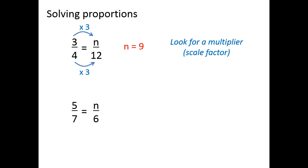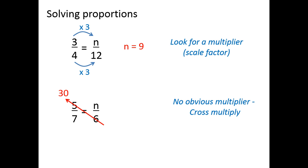But not all proportions have nice multipliers. When I look at 7 and 6 in the denominators of these fractions, I can't see an easy multiplier to get from 7 to 6. So if there's no easy scale factor, cross-multiplying is the way to find the missing value. We've seen cross-multiplying before — if two fractions' cross-products are equal, the fractions must be equal. So we say 5 times 6 equals 30, which must equal 7 times n, or 7n. If 7n equals 30, then n equals 30 sevenths, or 4 and 2 sevenths.